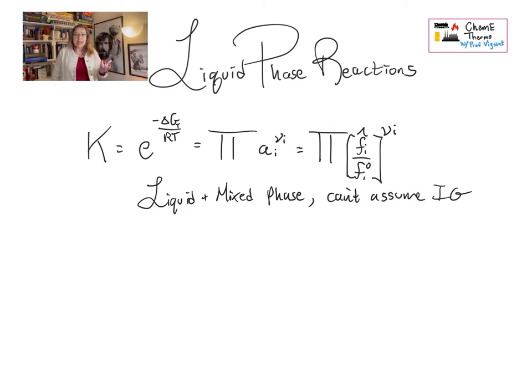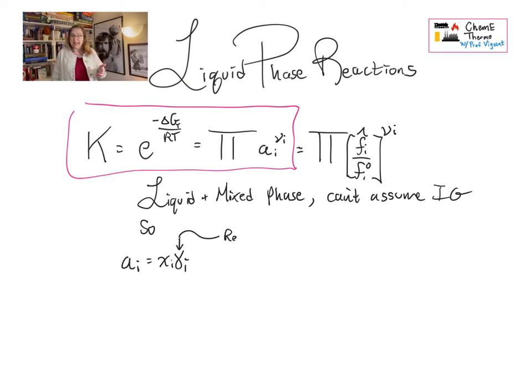So in a liquid, we can't use the ideal gas assumption. So we can't have yi times p is what we sub in here. So we tend to use the activity version when we think about liquids. And quite often in liquids, when we're using activity, we might be able to assume ideal solution. That is, gamma equals 1 when you have ideal solution. And the reason we might be able to assume ideal solution is if we are working in a dilute solution.